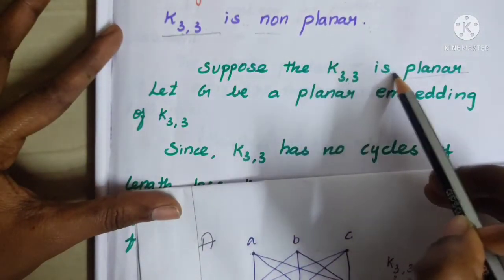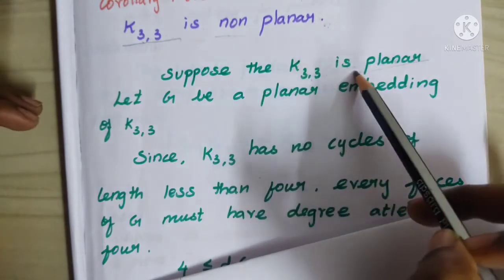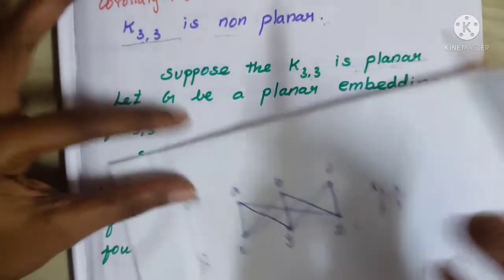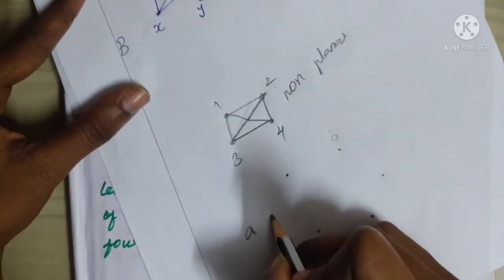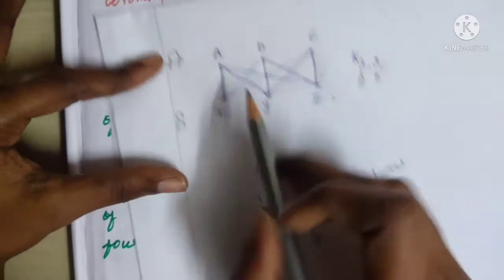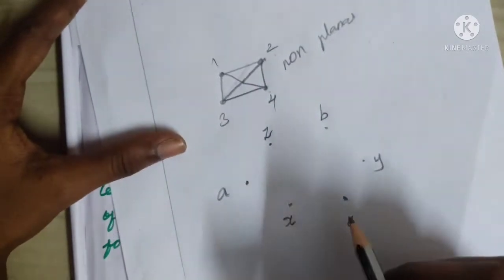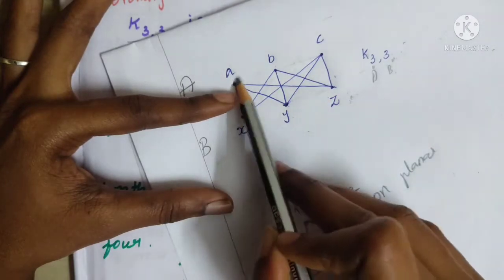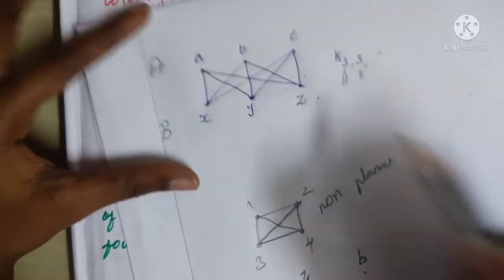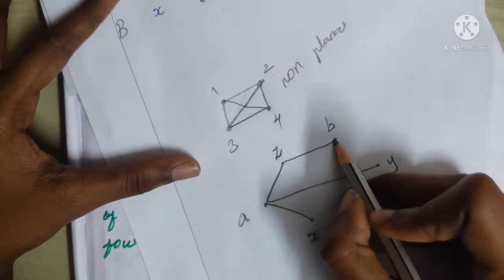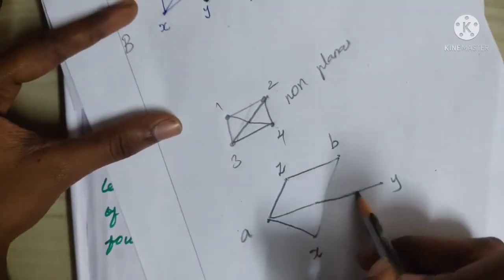Suppose that K3,3 is planar. How do you draw the graph? The A-set has vertices A, B, C, and the B-set has vertices X, Y, Z. A connects to X, Y, Z. B also connects to X, Y, Z. So we can try to draw it as a planar graph, but there is a crossover — B to X is a crossover.